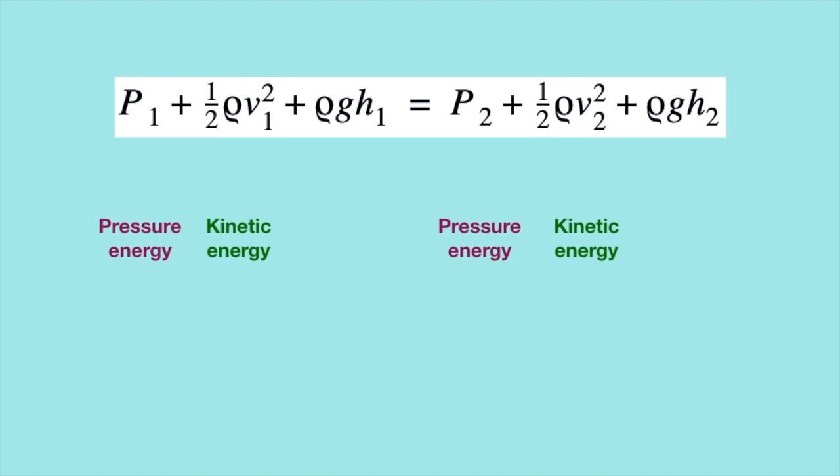In crude terms, the movement of the air causes it to have some 'oomph,' which can be described by its kinetic energy. That oomph is associated with how much mass the air has and how fast it is moving. The third term describes the potential energy the air has due to how high it is above the ground.